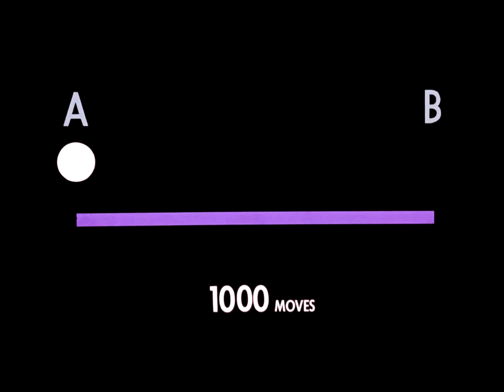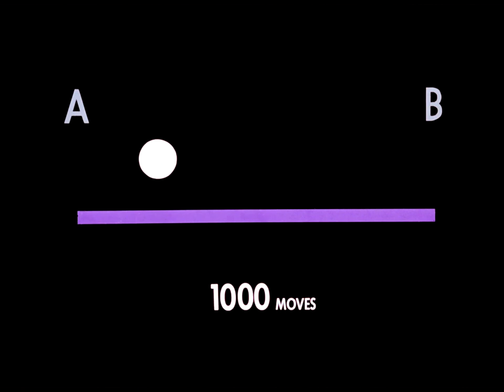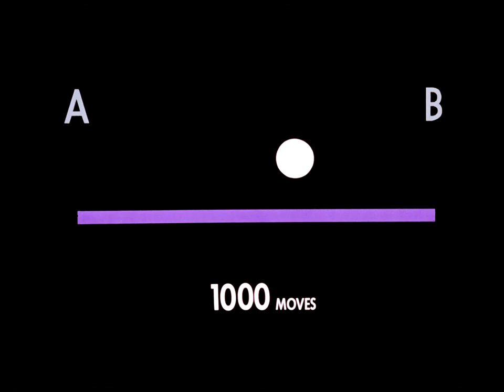One thousand moves from A to B. Tempos appear to be modified by context and association. For example, if this disk is associated with a large object such as the sun, it appears to be traveling very fast. If seen as a tennis ball, its motion seems unbearably slow.